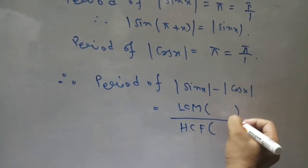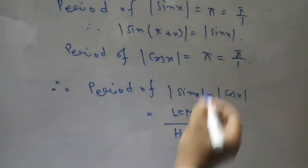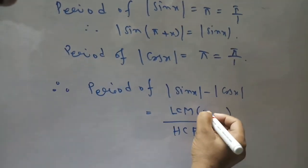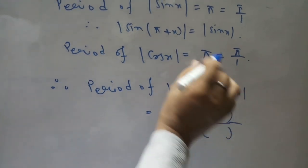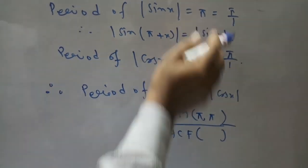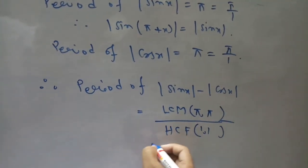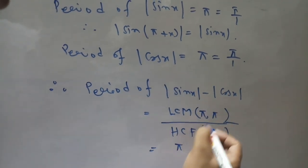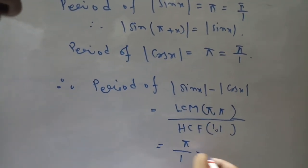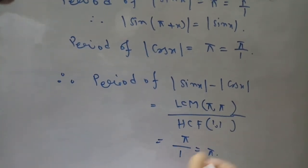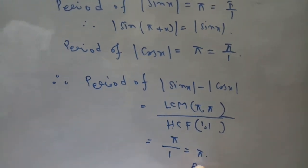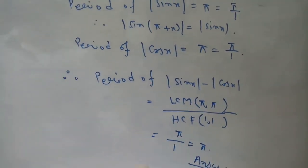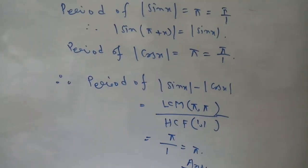Therefore, the period of |sin x| − |cos x| equals LCM of numerators divided by HCF of denominators. The numerators are π and π, and the denominators are 1 and 1. LCM of π and π is π, divided by HCF of 1 and 1 is 1. So the answer is π. This is the period of |sin x| − |cos x|.